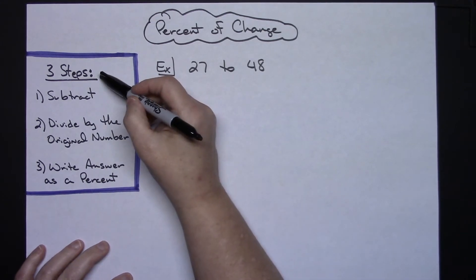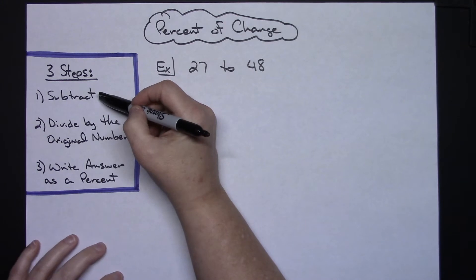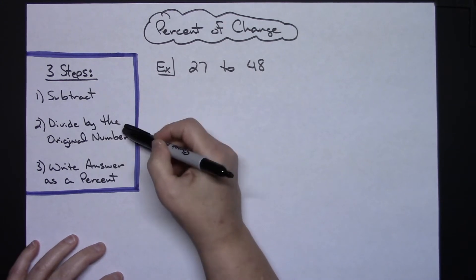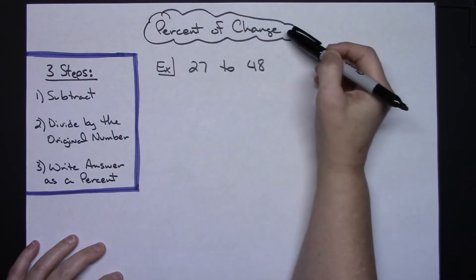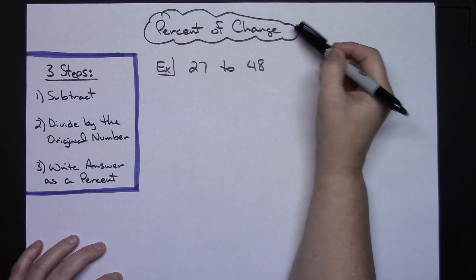So my three steps are going to be: step number one, we're going to subtract. Step number two, we are going to divide by our original number. And number three, then we are going to write our answer as a percent because we are trying to calculate a percent of change.